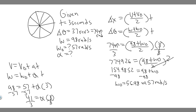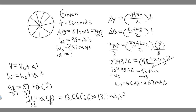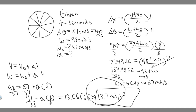That gives 13.6666..., which we round to 13.7 radians per second squared — because we divided radians per second by seconds. So 13.7 radians per second squared is the constant angular acceleration of the wheel. That's the answer to this problem.